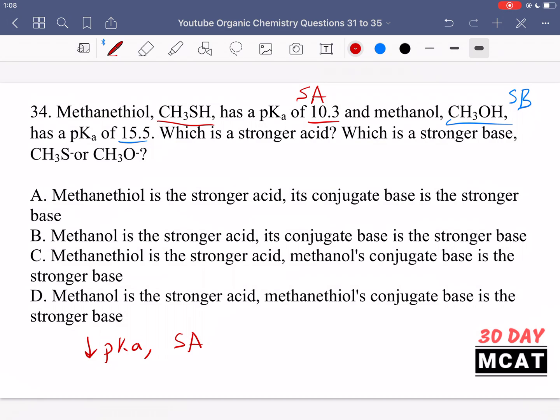You also need to keep in mind conjugate acids and bases. If something is an acid, when it's deprotonated it forms a negatively charged deprotonated form which is now a conjugate base because this molecule can grab a proton and go back to the acid form.